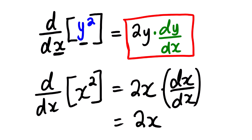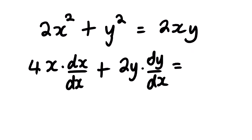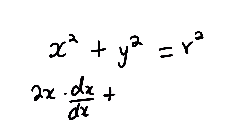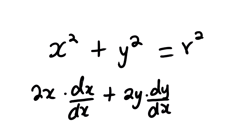So it is very important to take note of this. Let us look at the derivative of this equation with respect to x. The derivative of x squared is 2x multiplied by dx over dx, plus the derivative of y squared is 2y multiplied by dy over dx. The derivative of r squared is 2r multiplied by dr over dx.